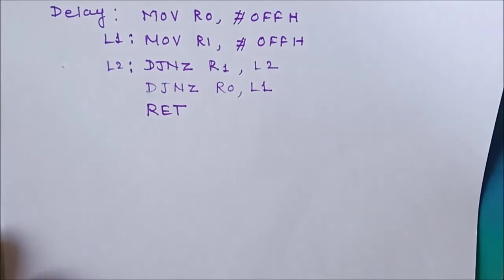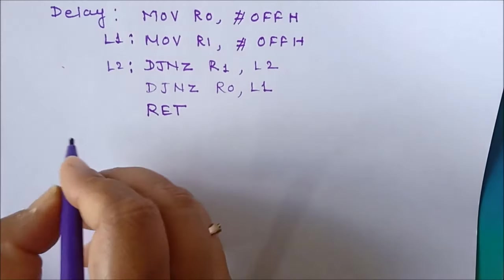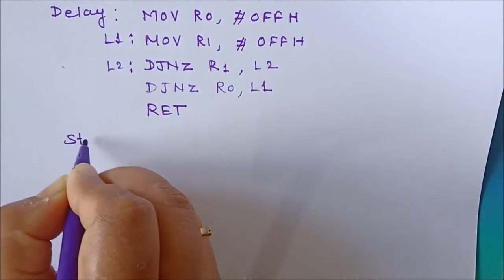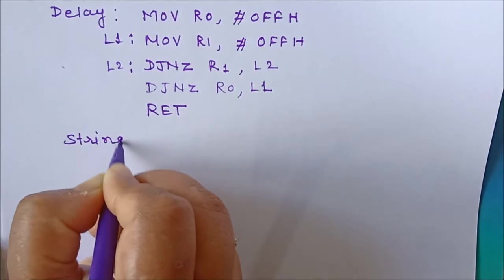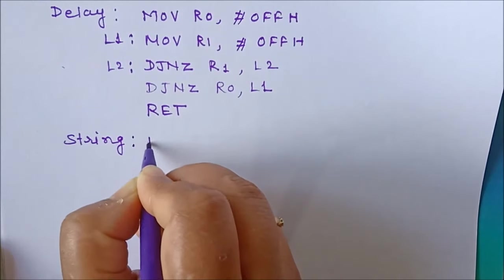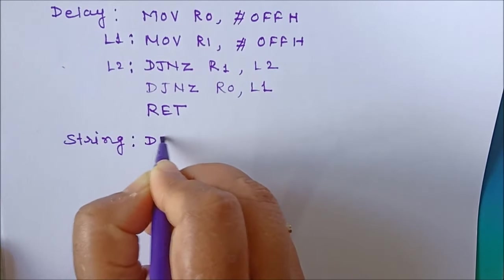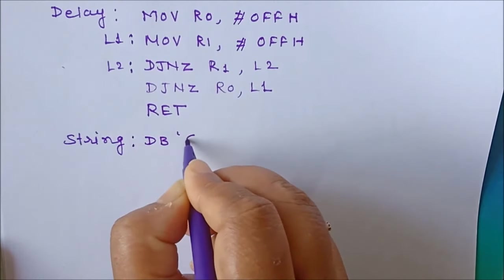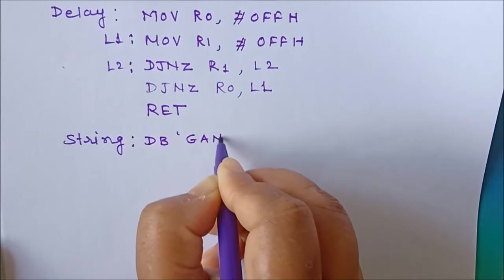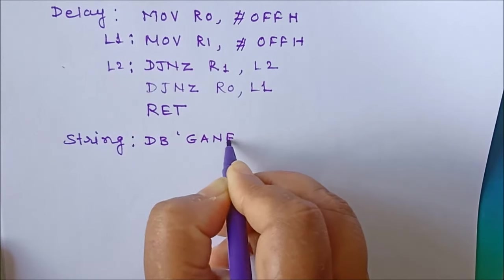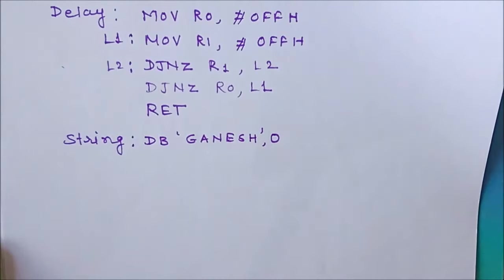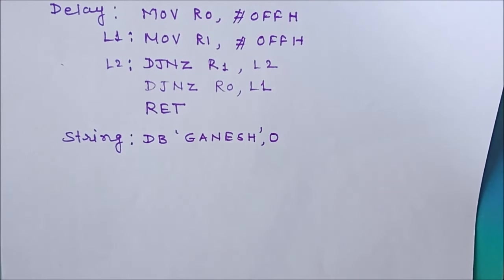The remaining important element is the string lookup table. We define it with the label 'string' using the DB directive, which indicates each character ASCII value is 8 bits wide. We write the string we want to display — in this case 'Ganesh' — followed by a 0 to indicate the end of the string.